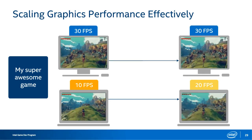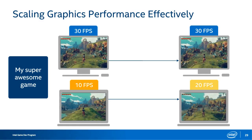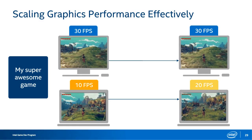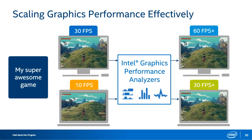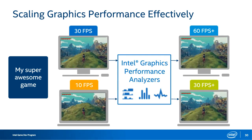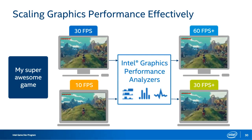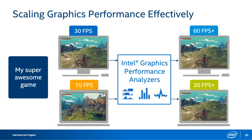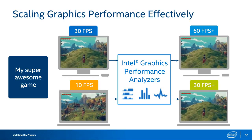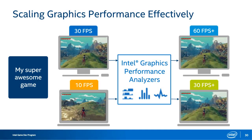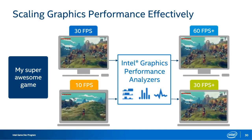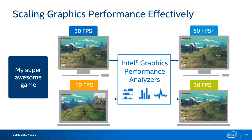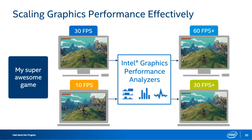That is where GPA comes in. Using a profiling tool, you can target optimizations to minimize visual quality impact while dramatically improving performance. An added bonus is that with targeted optimizations like optimizing shaders, identifying and implementing best practices, and using LODs, you can also improve the look and feel of your game on high-end spec. So instead of hitting 30 FPS across the board, you can achieve 60 FPS on your high-end spec and 30 on your min spec.